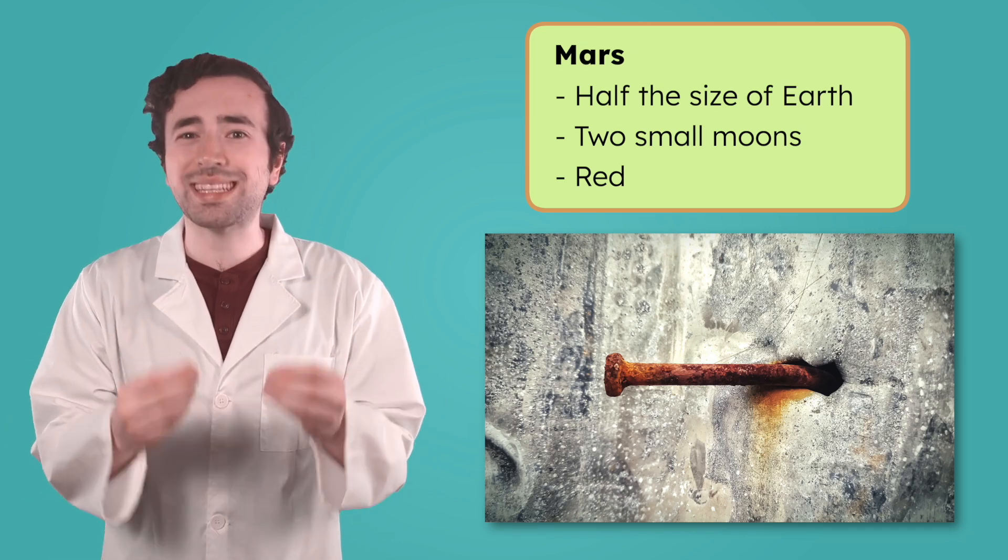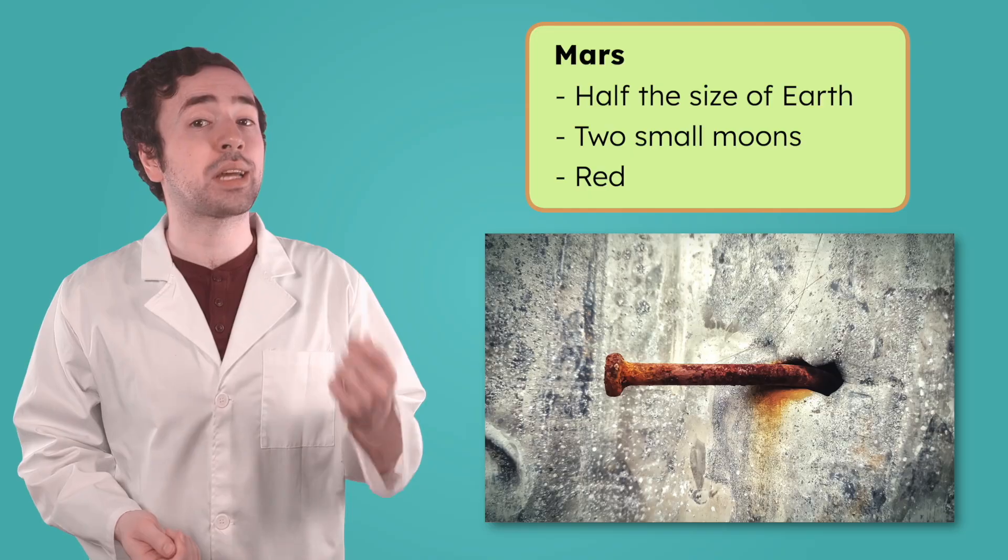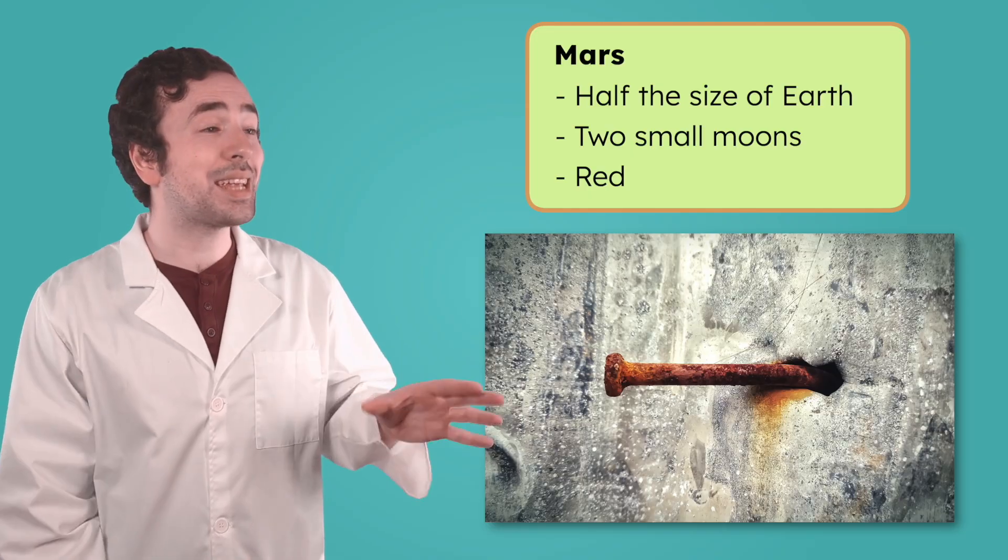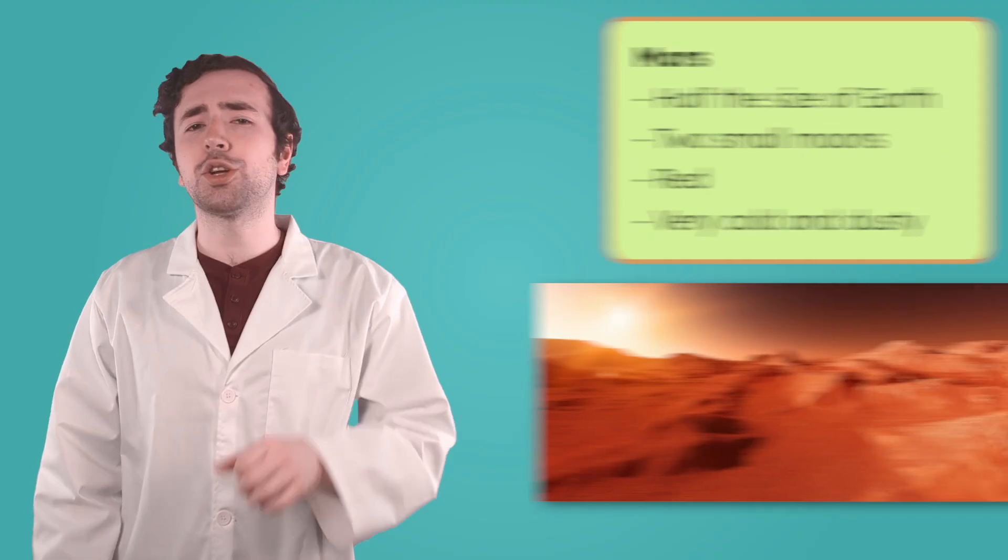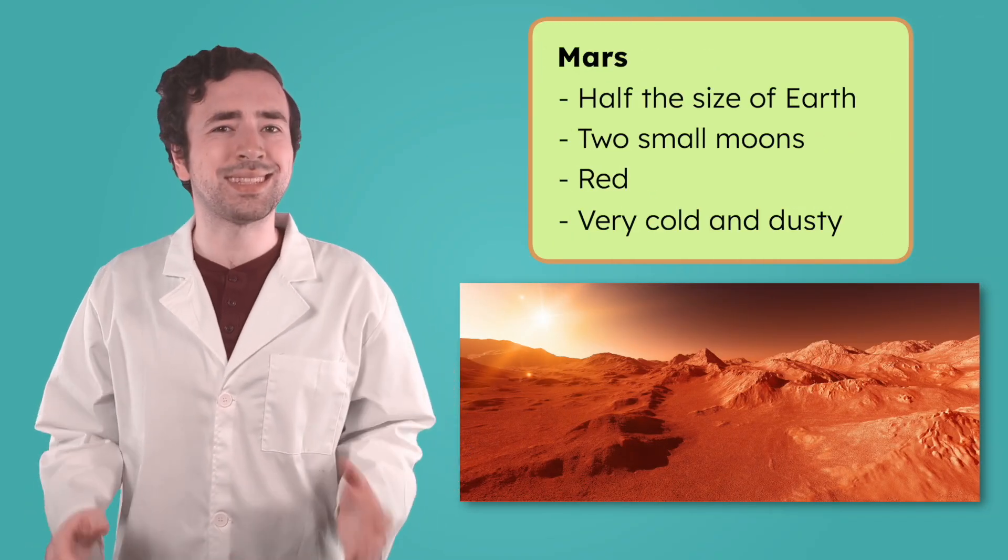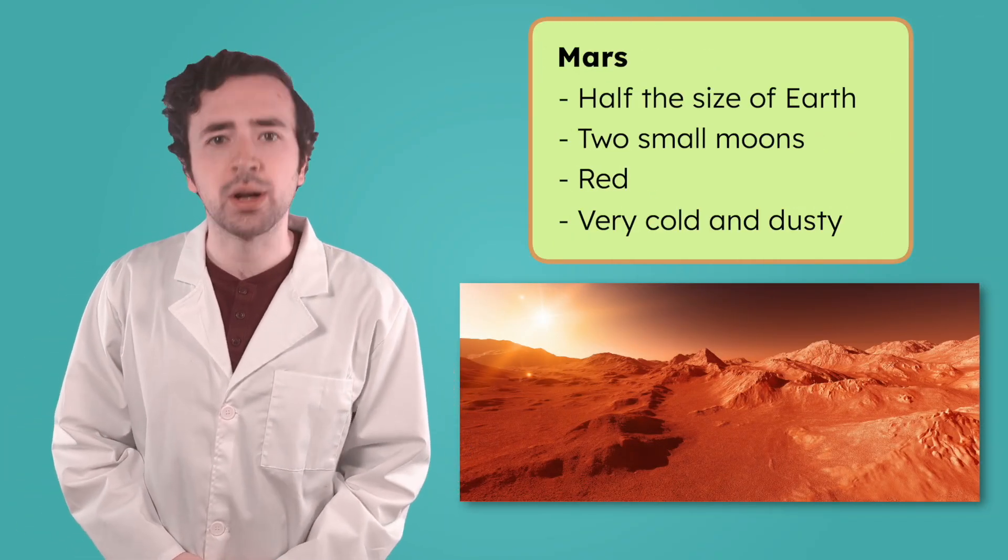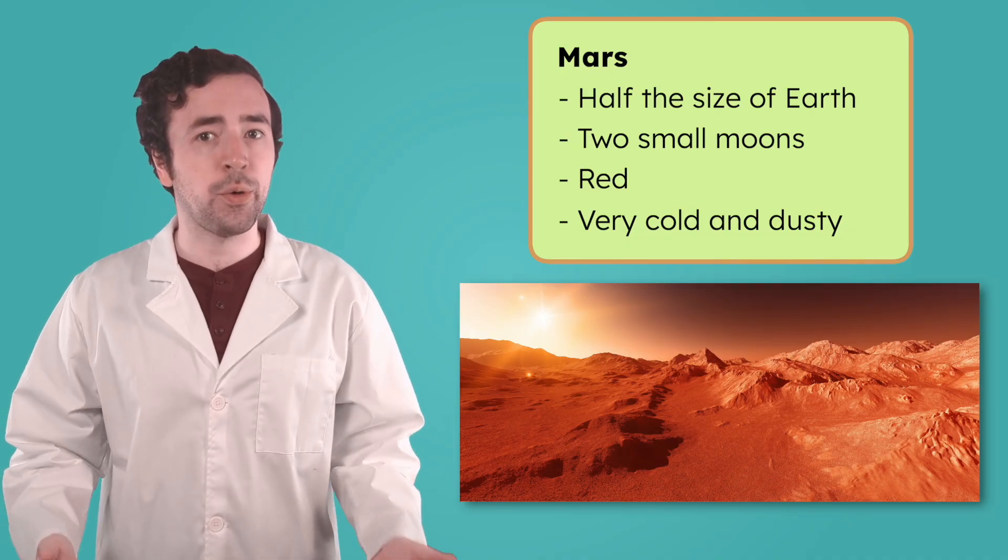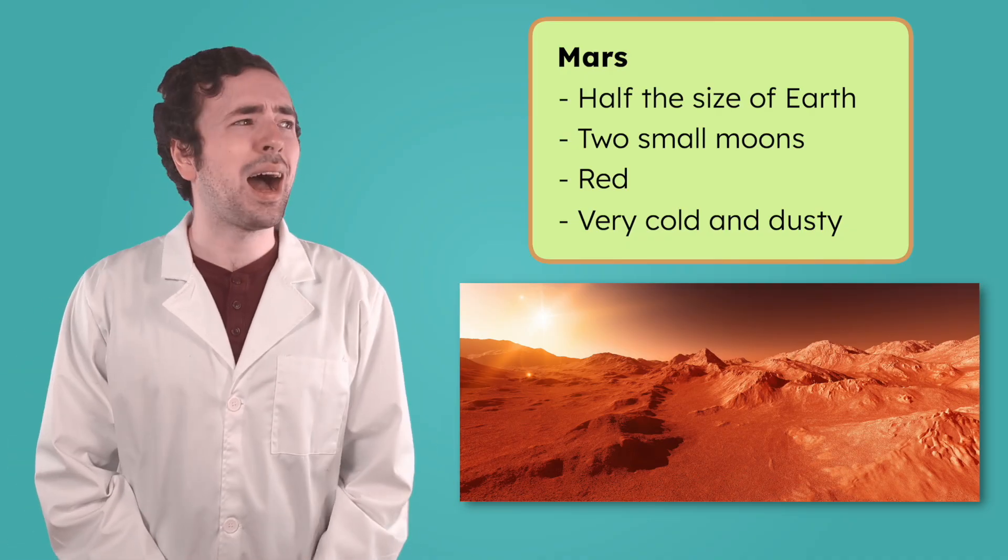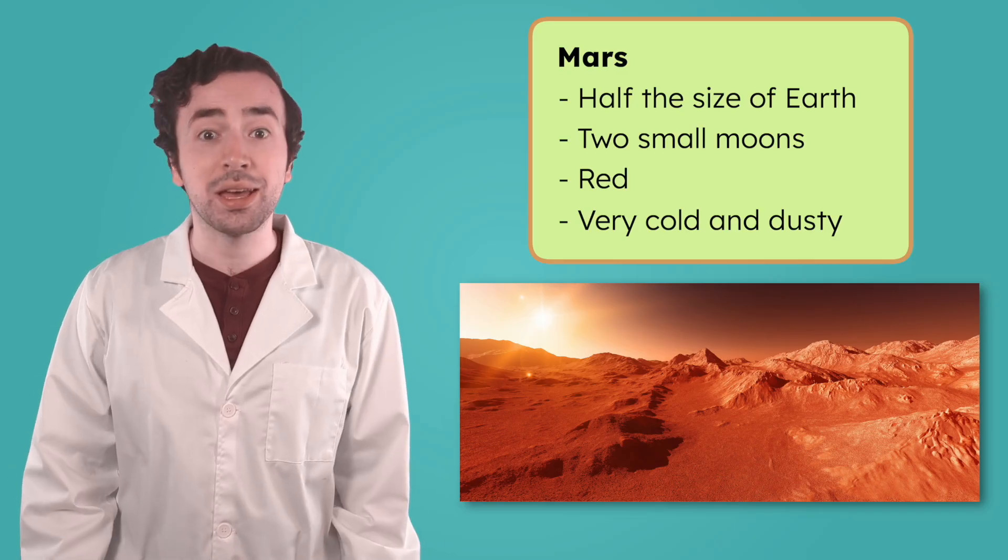That reddish rust happens when iron comes into contact with oxygen. The same thing happens to the iron on Mars. The surface of Mars is cold and dusty. Its distance from the sun and thin atmosphere mean it's much colder than the other inner planets. Like Earth, though, Mars has seasons, ice caps, volcanoes, and wind.